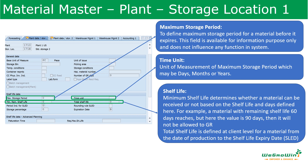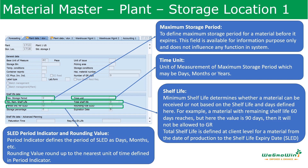Total Shelf Life is defined at the client level — it represents the total shelf life for the material from the date of production to the shelf life expiry date. The Shelf Life Expiry Date (SLED) period indicator defines the period unit such as days or months. The rounding value rounds up to the nearest unit of measurement defined in the period indicator.